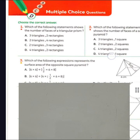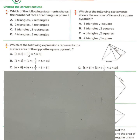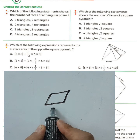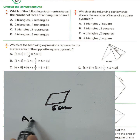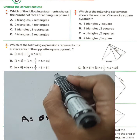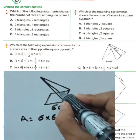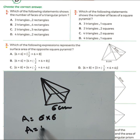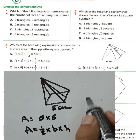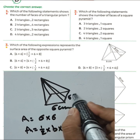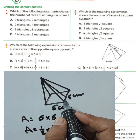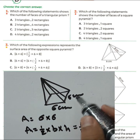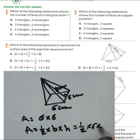Question number three: which of the following expressions represents the surface area of the square pyramid shown? We have a square base with side length six, so the area of the base is six times six. We have four congruent triangles, and the area of each is one-half times base times height. The base of each triangle is six centimeters and the corresponding height is eight centimeters.